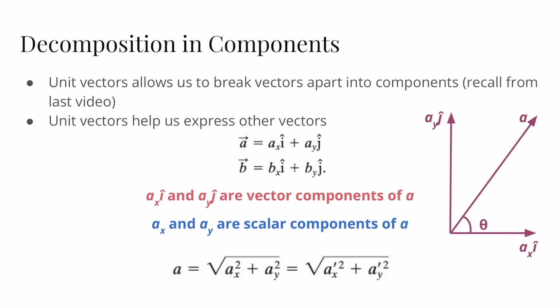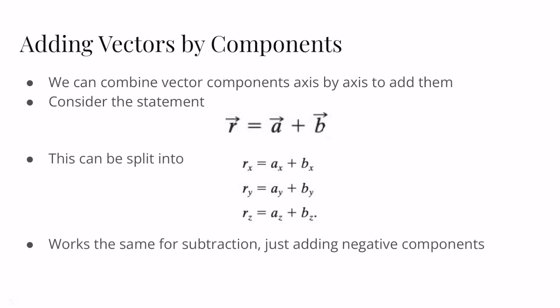Ax and Ay are the scalar components of A. To find the magnitude of A, we simply take the square root of the sum of the squares of the scalar components. This looks like the Pythagorean theorem — and in fact, on the graph on the right, Ax is one side, Ay is the other side, and the magnitude of A is the hypotenuse, which indeed gives us the Pythagorean theorem.